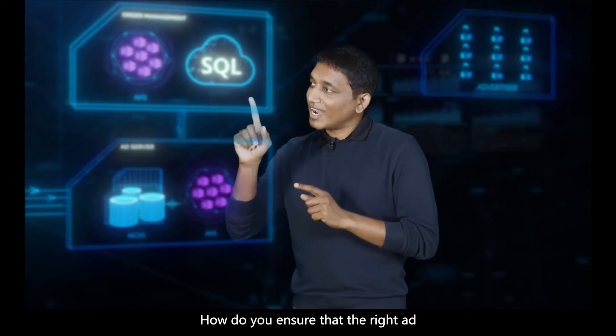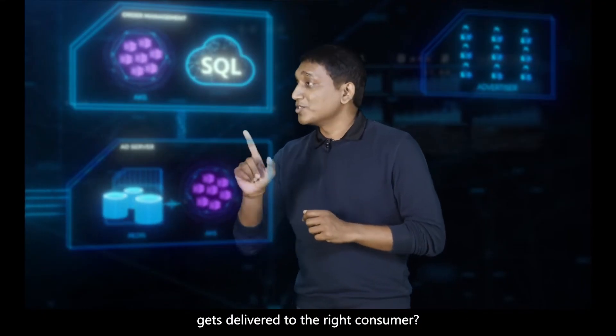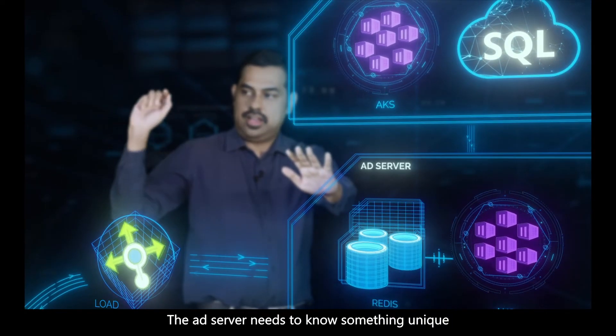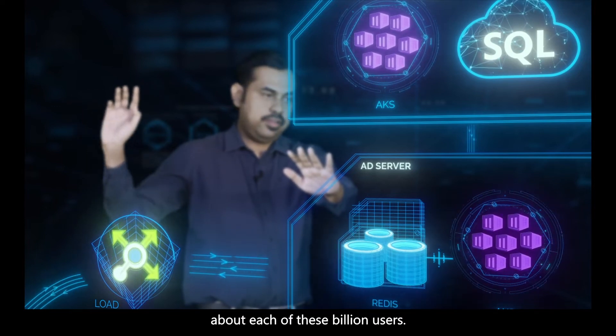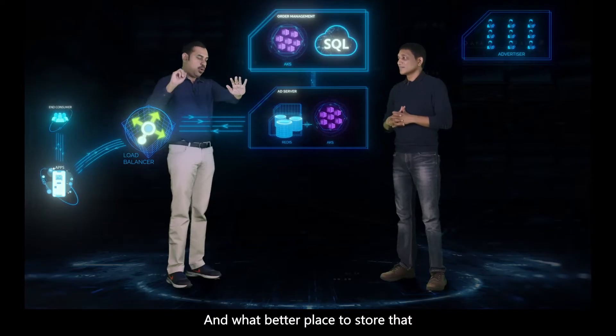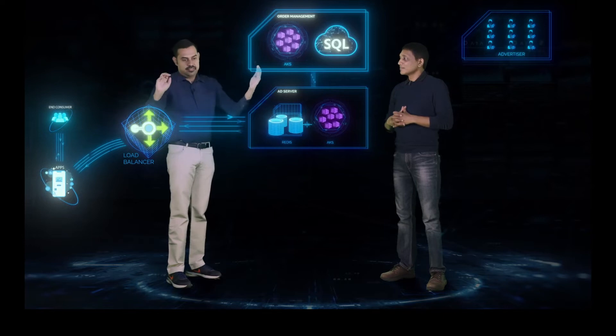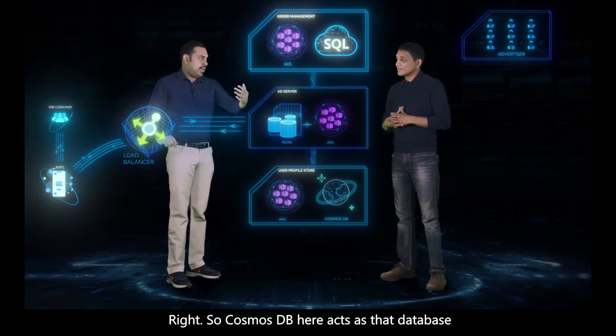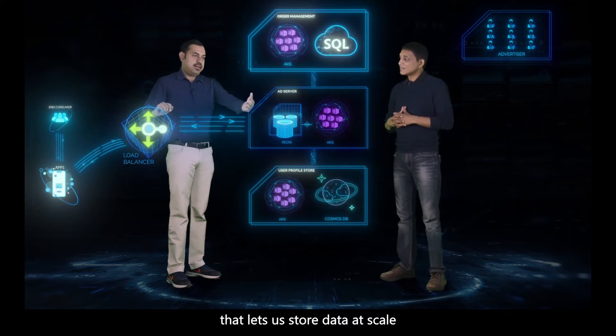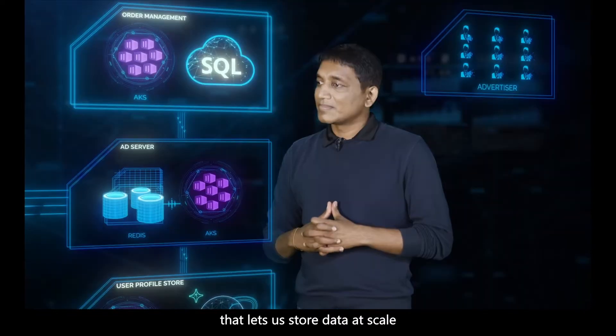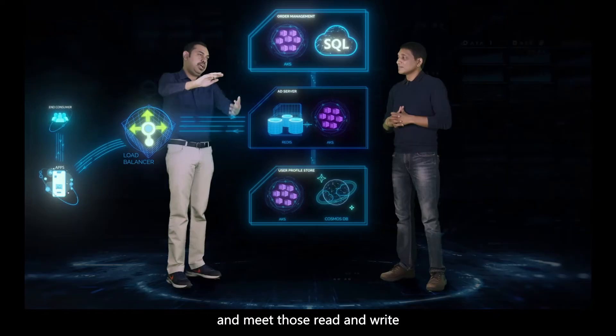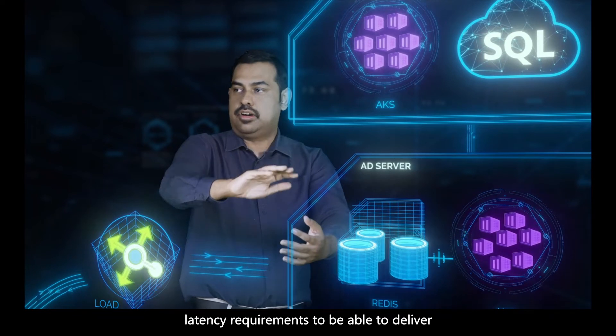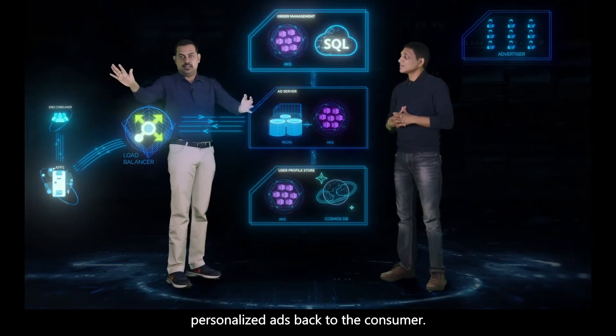How do we ensure the right ad gets delivered to the right consumer? The ad server needs to know something unique about each of these billion users, and what better place to store that than Cosmos DB? Cosmos DB acts as that database that lets us store data at scale and meet those read and write latency requirements to be able to deliver personalized ads back to the consumer.